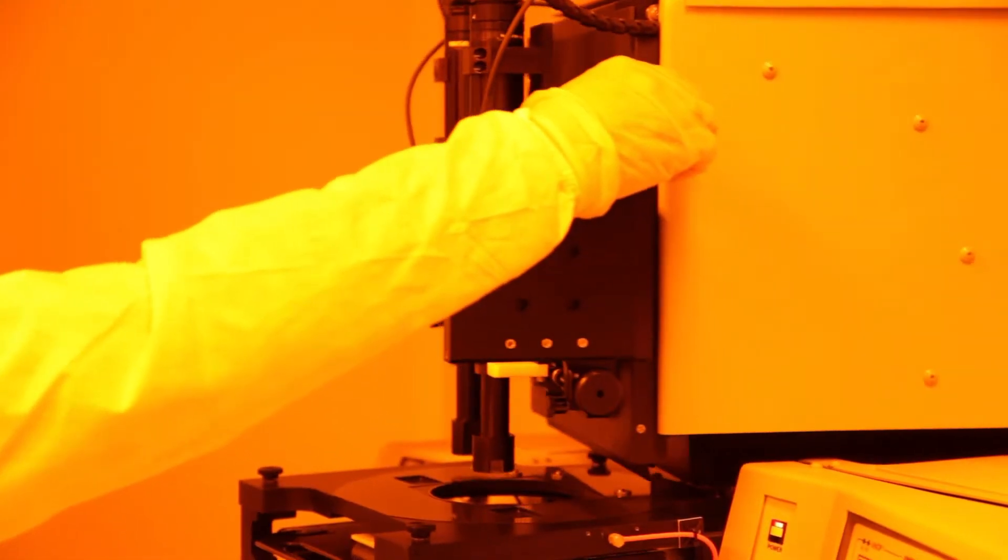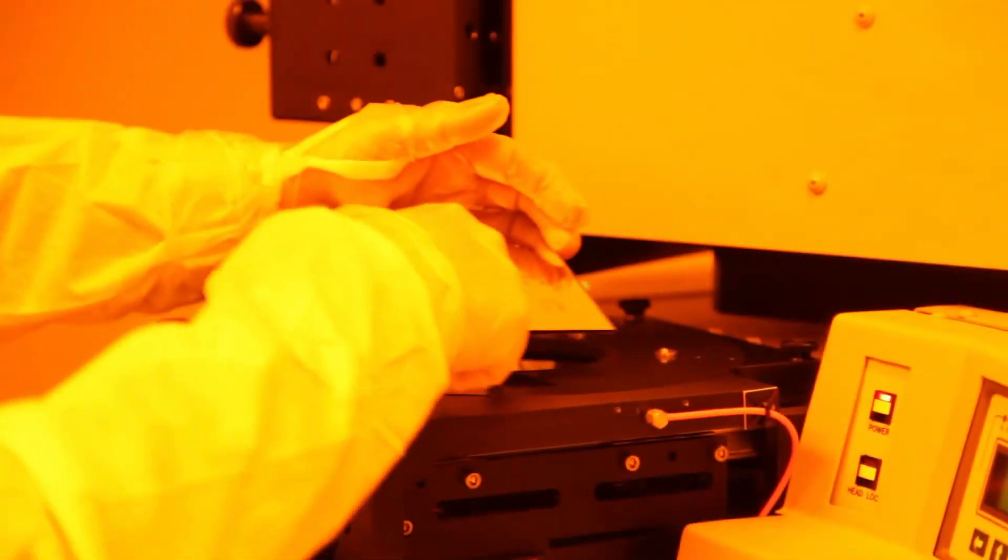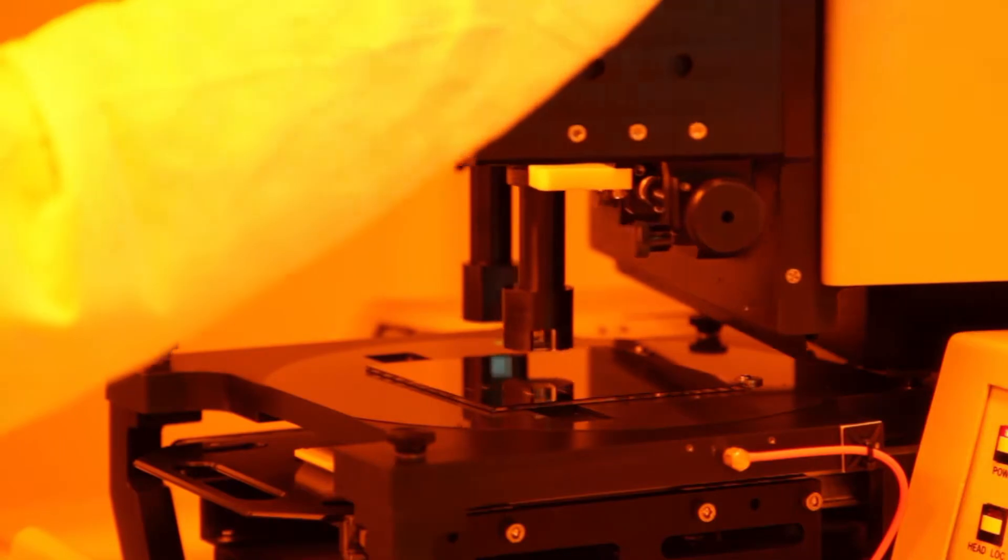In our mask aligner, the imaging part can swing to the side to make it easier to put the mask in place. There are posts that make it easy to position the mask, which is held down by vacuum. After swinging the microscopes back into position, you can use them to straighten your mask.